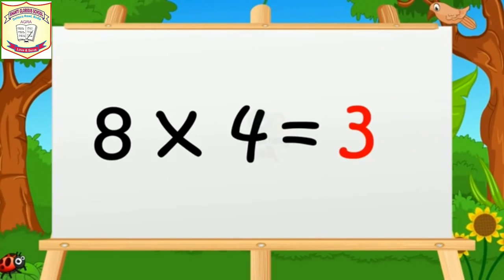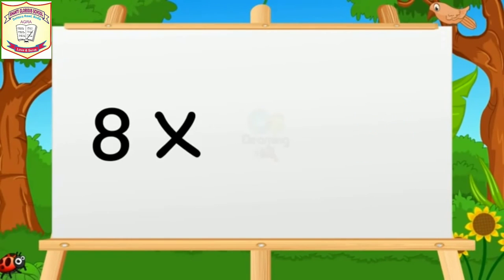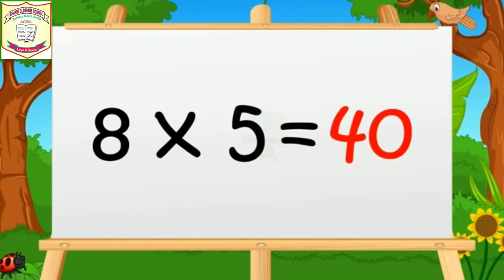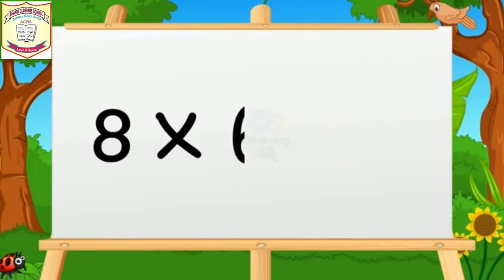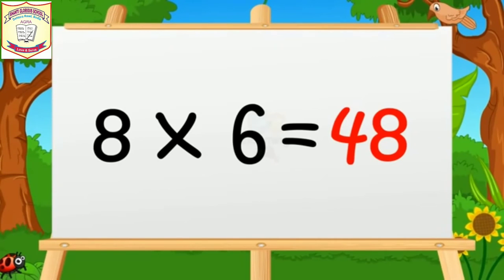Eight fours are thirty-two. Eight fives are forty. Eight sixes are forty-eight.